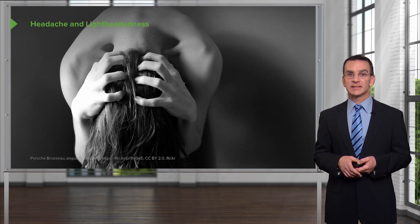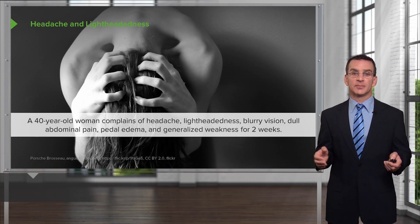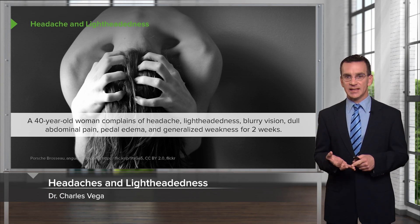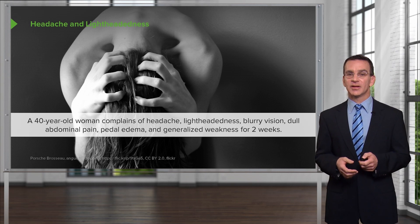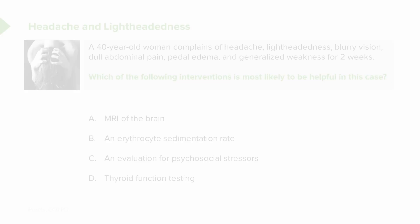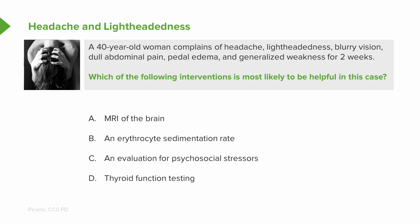Let's do one more case. A 40-year-old woman presents with headache, lightheadedness, blurry vision, dull abdominal pain, pedal edema, and generalized weakness — all for two weeks. Which of the following interventions is most likely to be helpful? A: MRI of the brain. B: erythrocyte sedimentation rate. C: an evaluation for psychosocial stressors. Or D: thyroid function testing.